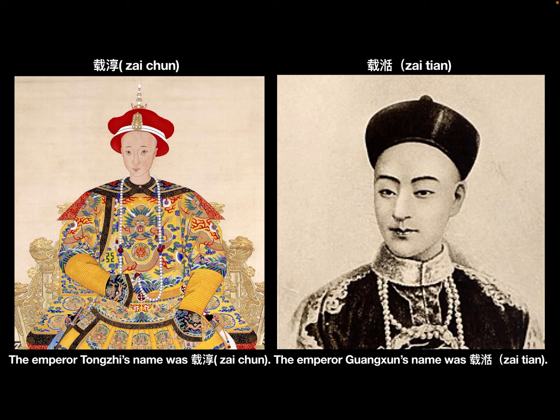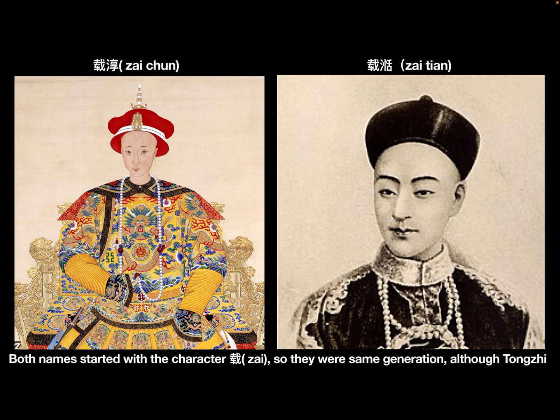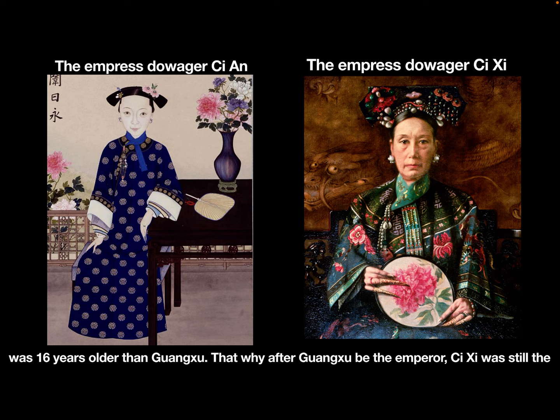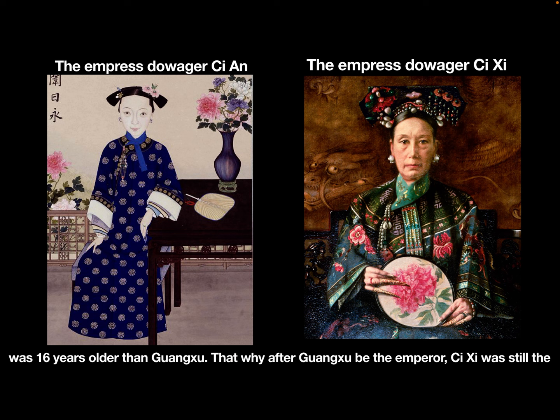Emperor Dong Zhih's name was Zai Chun and Emperor Guangxu's name was Zai Tian. Both names started with the character Zai, so they were the same generation, although Dong Zhih was 16 years older than Guangxu. That's why after Guangxu became Emperor, Cixi was still the Empress Dowager, not the Grand Empress Dowager.